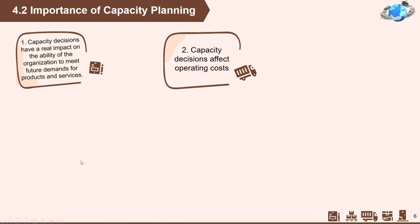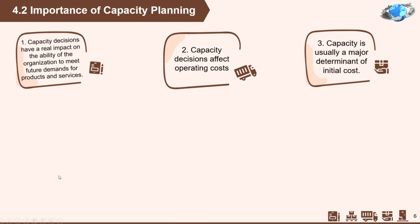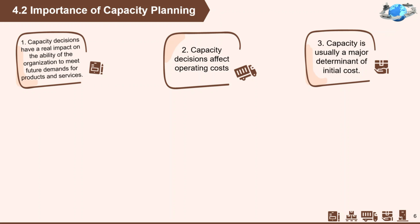Next, capacity decisions affect operating costs. Ideally, capacity and demand requirements will be matched, which will tend to minimize operating costs. Next, capacity is usually a major determinant of initial cost — typically the greater the capacity of a productive unit, the greater its cost. This does not necessarily imply a one-for-one relationship; larger units tend to cost proportionately less than smaller units.